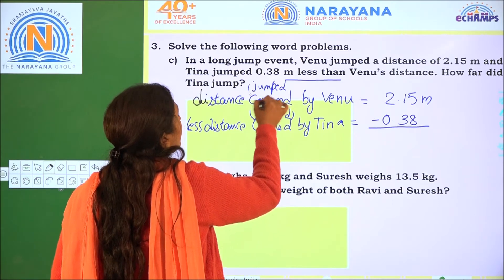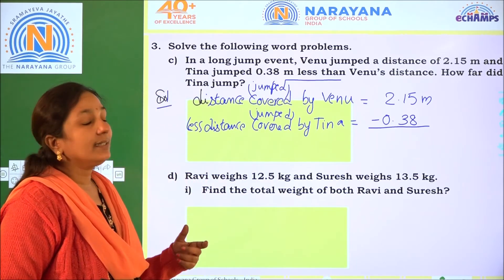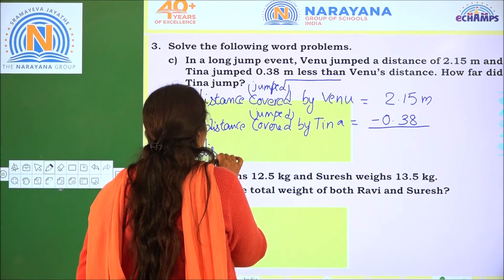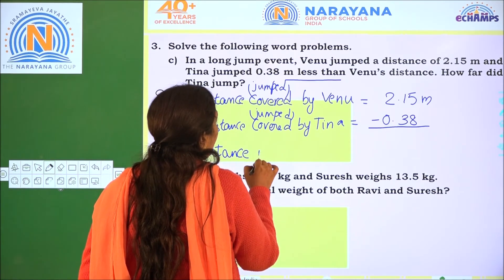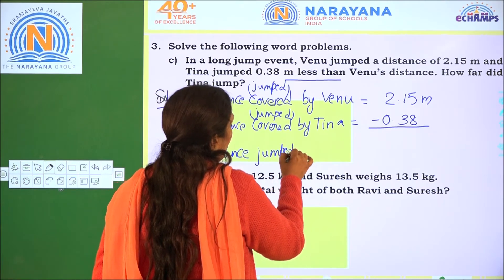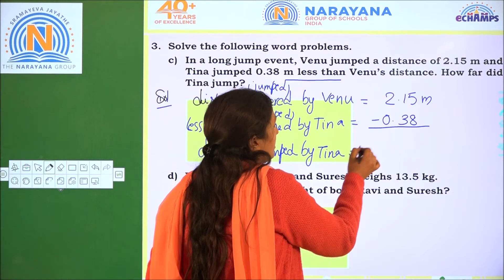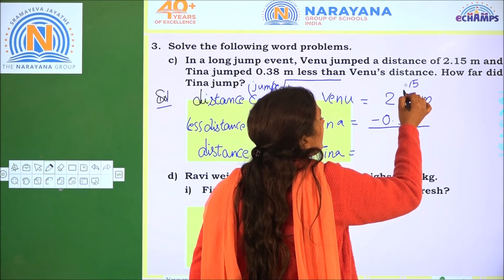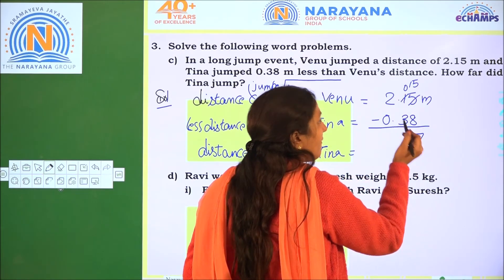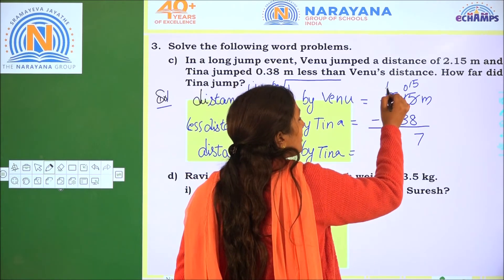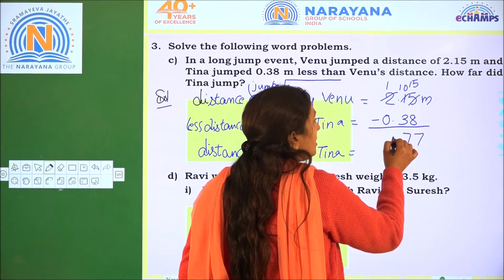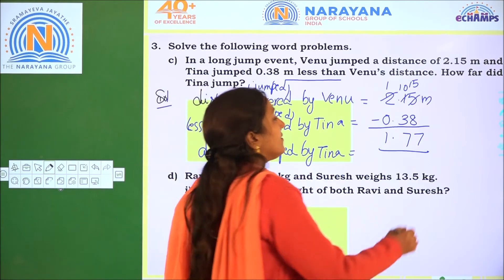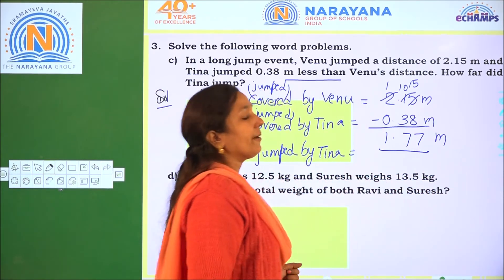Distance jumped by Venu minus the less distance covered by Tina gives us the distance jumped by Tina. 5 minus 8 — we regroup: 5 becomes 15, so 15 minus 8 is 7. 0 minus 3 — regroup again: 0 becomes 10, 10 minus 3 is 7. So the distance jumped by Tina is 1.77 meters.